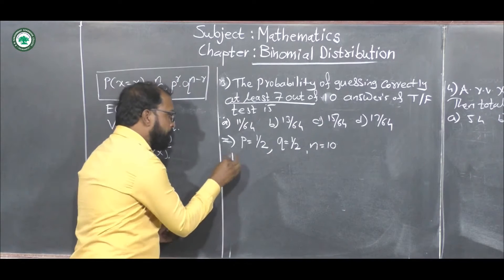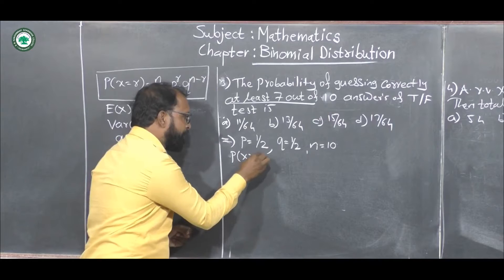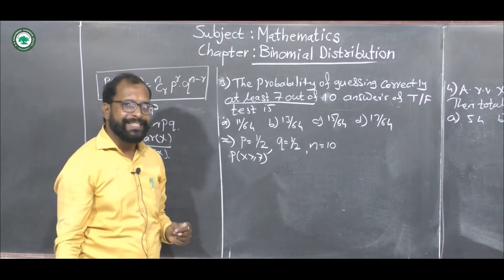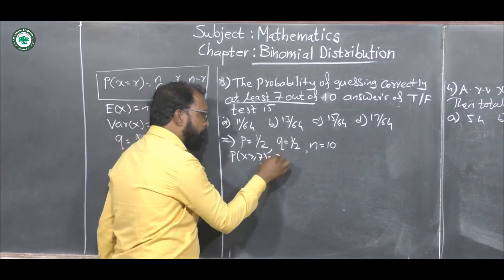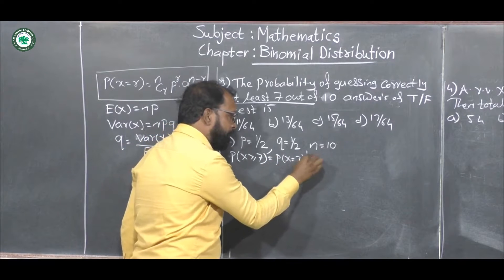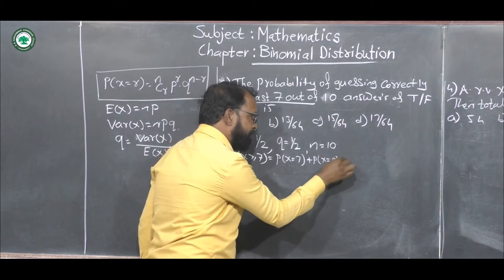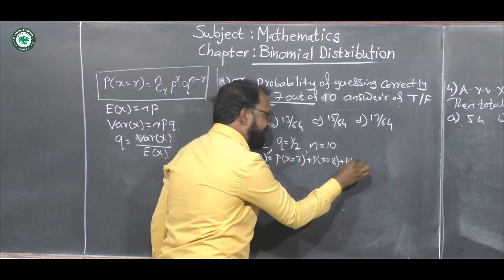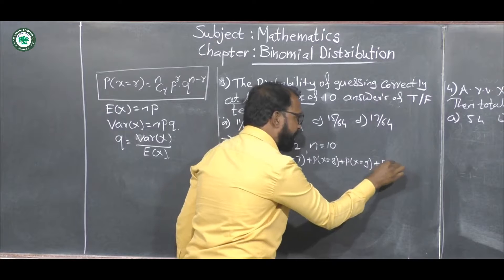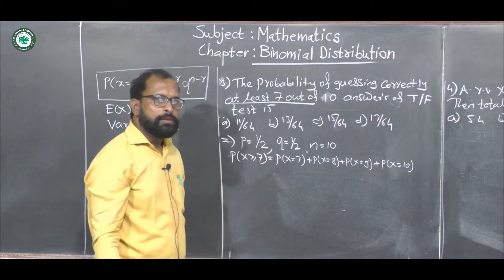This means we have to find the probability of X greater than or equal to 7. That is: probability of X equals 7, plus probability of X equals 8, plus probability of X equals 9, plus probability of X equals 10.